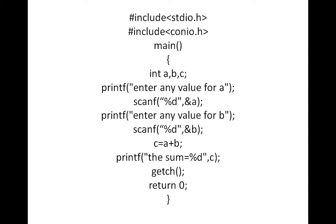See here, whenever we write any program, the program starts from the main function. So main with parentheses — this is called round parenthesis. Before that, we use header files: #include stdio.h and #include conio.h. stdio.h is the standard input output header file, and conio.h is the console input output header file. These two header files must be included whenever you write any program.